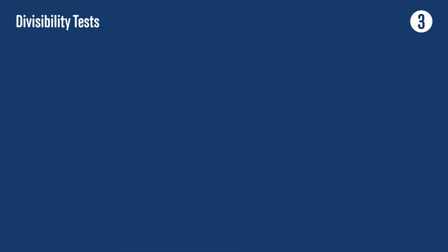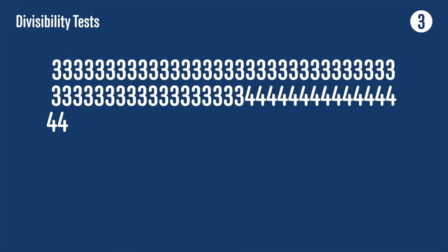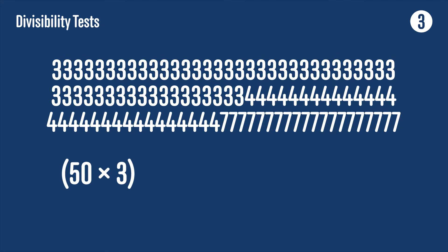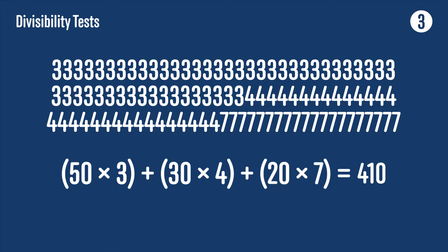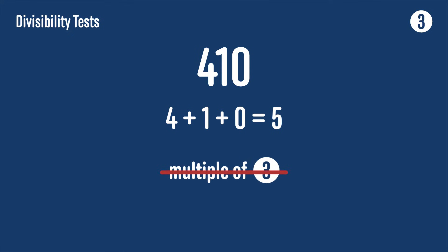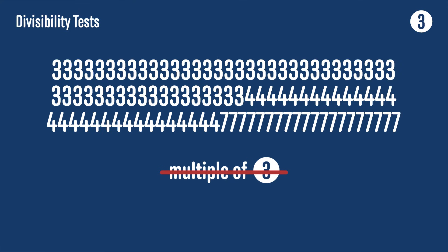For example, take a number that has 100 digits: the first 50 digits are all 3s, the next 30 digits are all 4s, and the final 20 digits are all 7s. Is this number a multiple of 3? We check by working out its digit sum: 50 × 3 + 30 × 4 + 20 × 7 = 410. To check if 410 is a multiple of 3, we add its digits: 4 + 1 + 0 = 5. This isn't a multiple of 3, so 410 isn't, and therefore the original number isn't a multiple of 3 either.